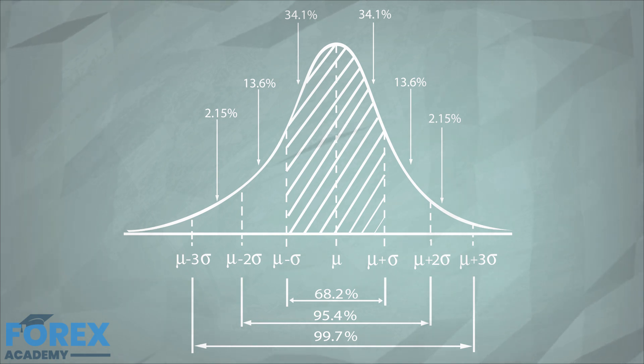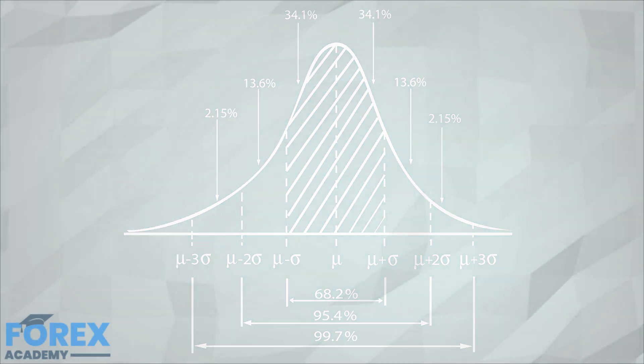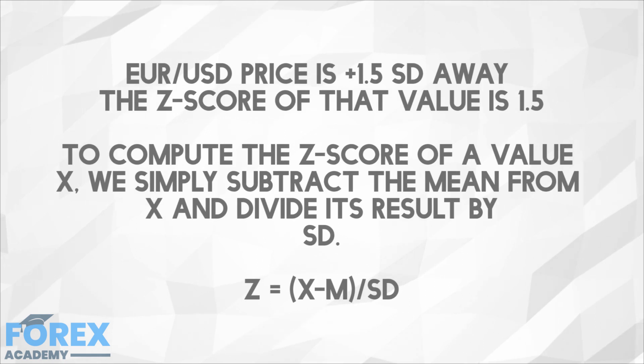For example, if the EUR/USD price is plus 1.5 SD away, the z-score for that value is 1.5. To compute the z-score of the value x, we simply subtract the mean from x and divide its result by SD. The m is equal to the mean.